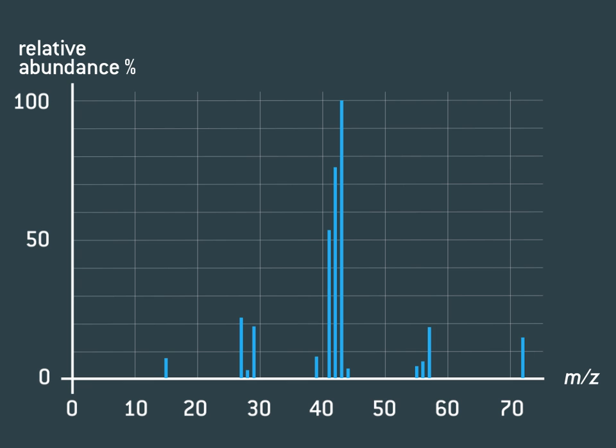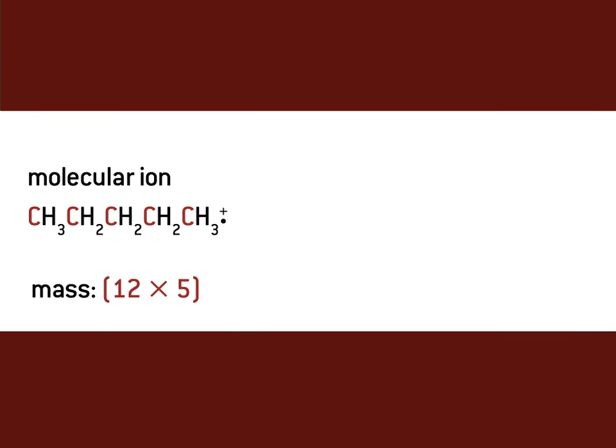Let's take a closer look at the mass spectrum of pentane. This peak is the molecular ion peak. The molecular ion for pentane has a mass of 72, the same as the relative formula mass of pentane.